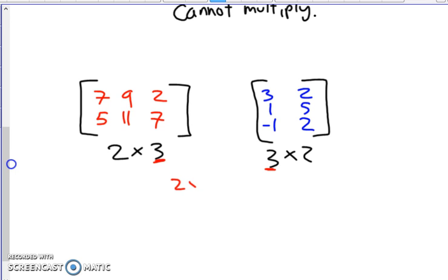One other thing, so if you multiply two by three by a three by two, you're allowed to multiply them because the columns of the first one match up with the rows of the second one. But this also tells you that the answer will be two by two. The resulting matrix you get is going to be a two by two matrix.